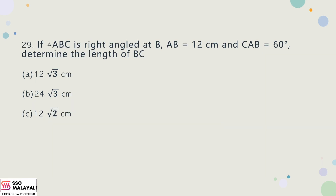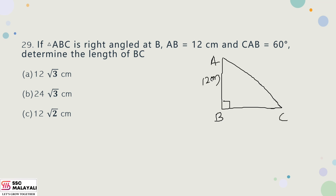Question 29: Triangle ABC is right-angled at B. AB = 12 cm and angle B = 60°. Find the length of BC. Using tan 60° = √3/1, with AB = 12 (adjacent side), BC = 12√3 cm. Option A is the correct answer.